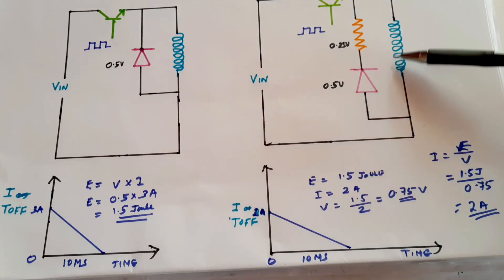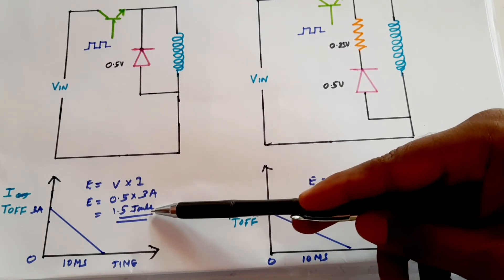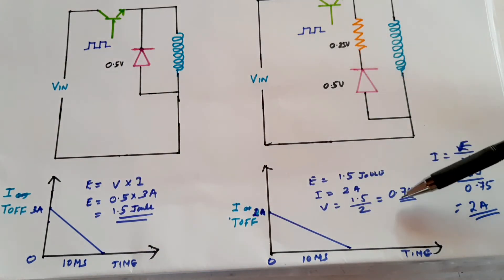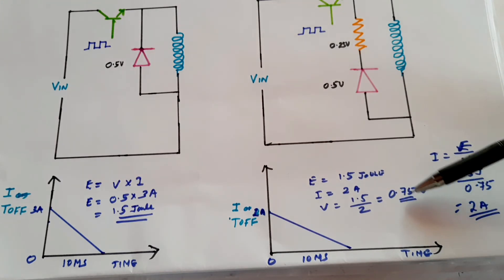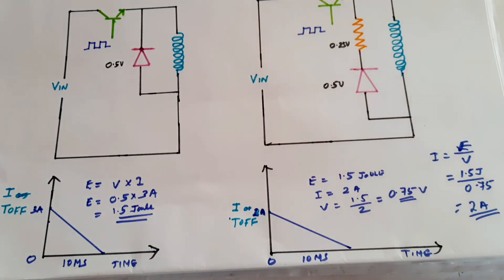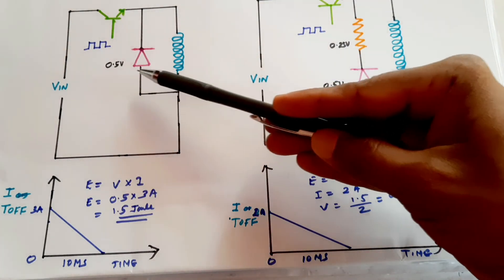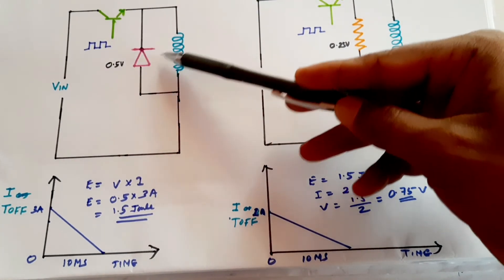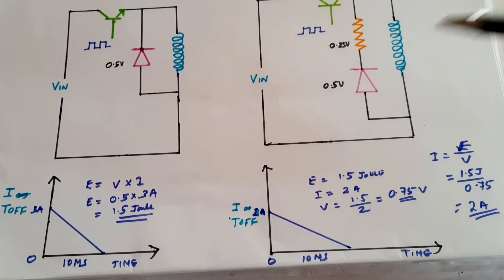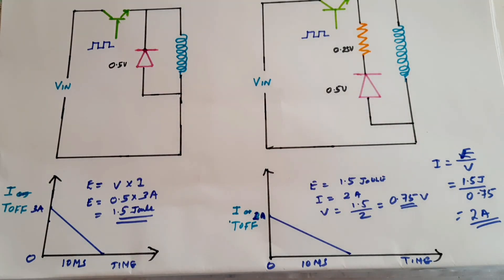What the inductor is actually doing is opposing a change in energy — it wants to keep its energy constant. When the transistor was on, the energy stored was 1.5 joules. Where the voltage is 0.5 volts, the current will be higher; where it has to oppose more voltage, each electron must carry more energy, so the current is lower. The property of the inductor is that it wants to remain at the same energy level — not the same current, but the same energy.